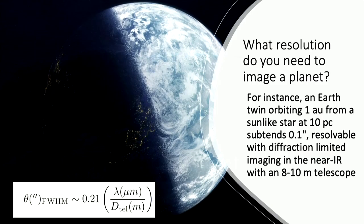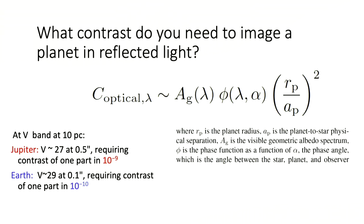There are two main issues you need to overcome to image a planet. The first is resolution. If you have an Earth twin orbiting at 1 AU around a star 10 parsecs away, you need to resolve something at 0.1 arc seconds. If you can get to diffraction-limited performance — here's the FWHM of our PSF — you can do that with an 8 to 10 meter telescope.